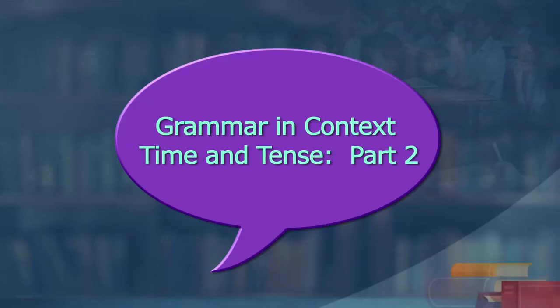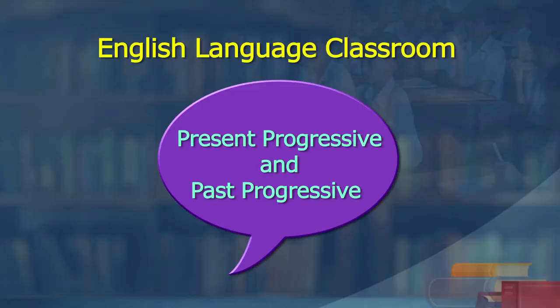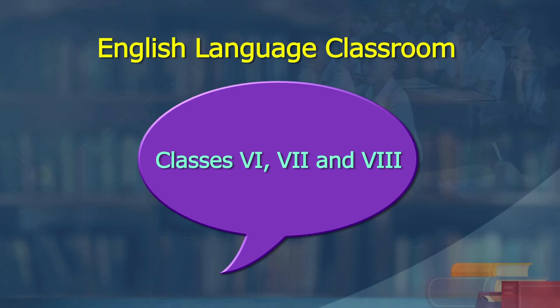Hello learners, welcome to the wonderful world of the English language classroom. We are learning some grammar today — this is the second part of Time and Tense. The grammar topic is time and tense. Today we learn how to understand and use present progressive and past progressive, that is present continuous and past continuous. This is meant for classes 6, 7, and 8, because we have time and tense in all three classes.